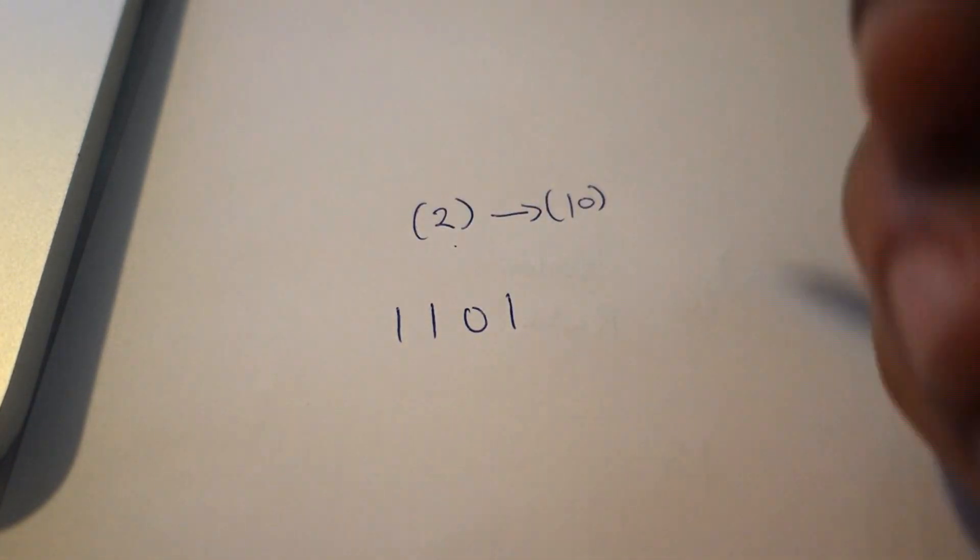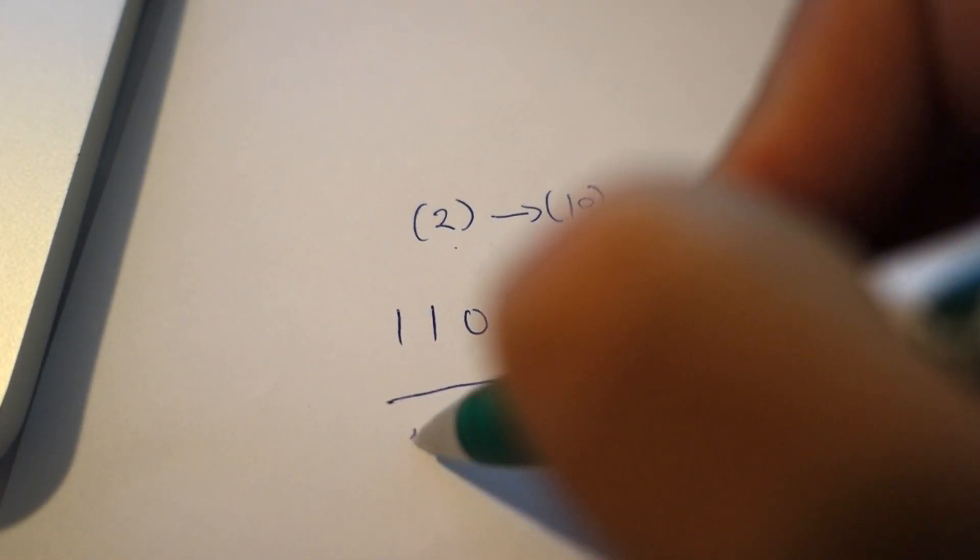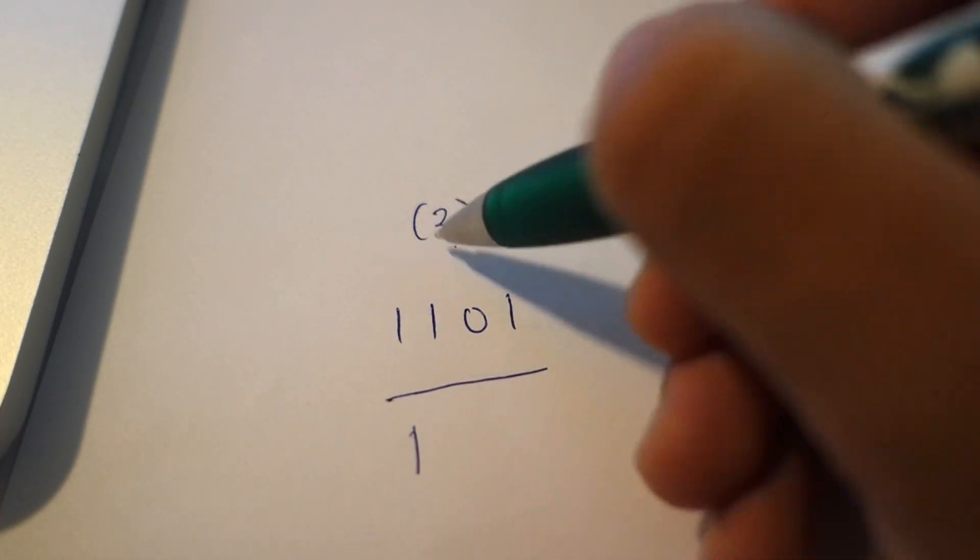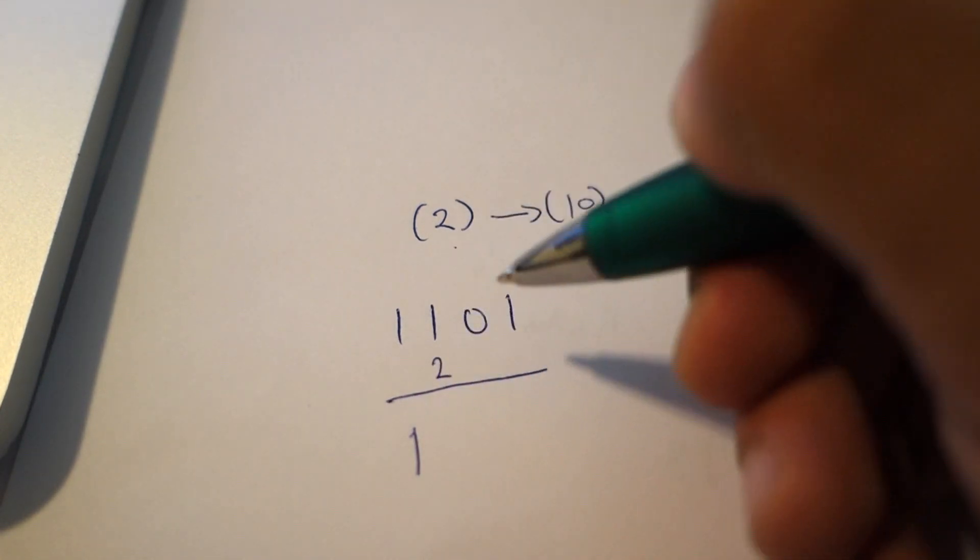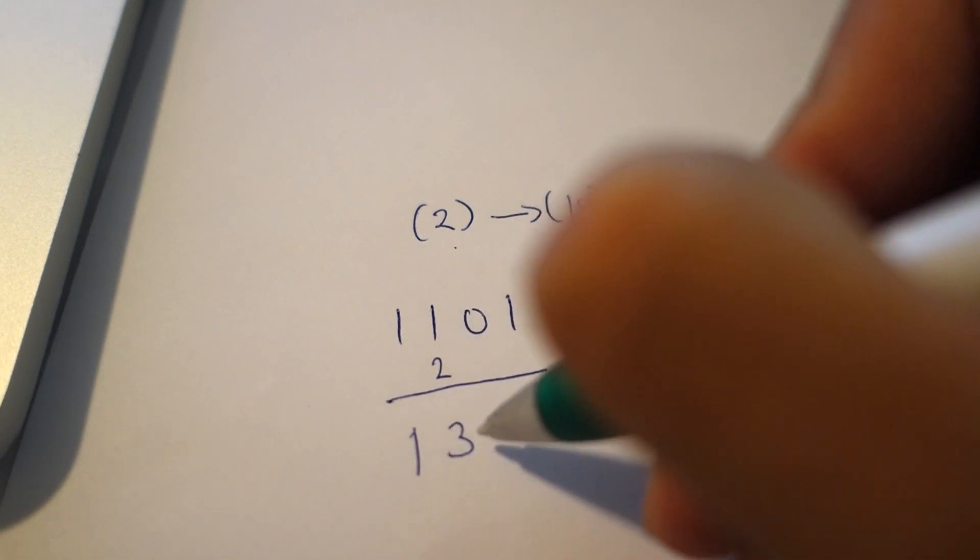So now we have the radix 2, you just multiply by 2 and then you add. This is 3. Because we took this number, we multiply it by 2, that's 2.